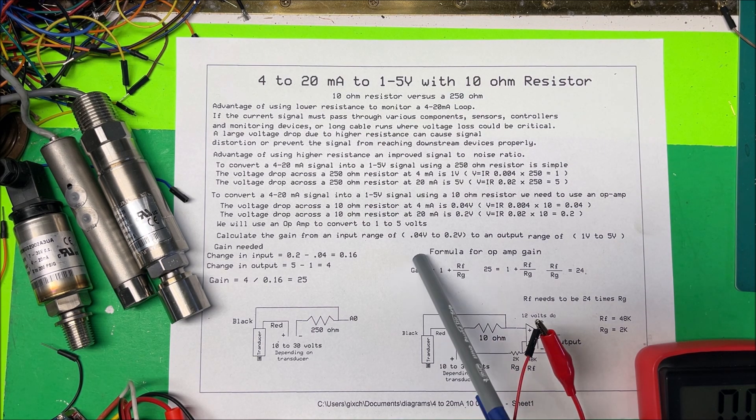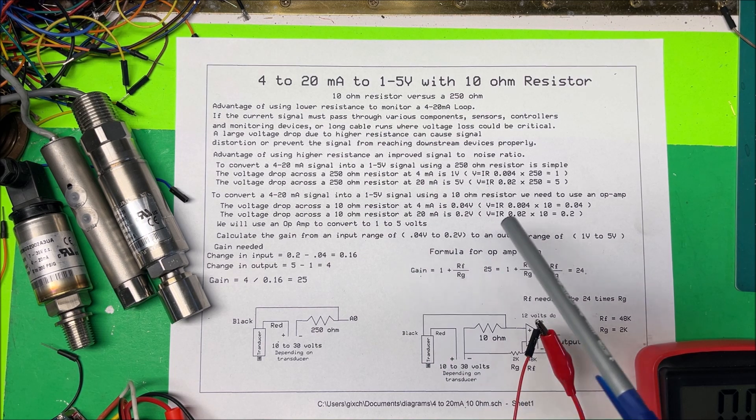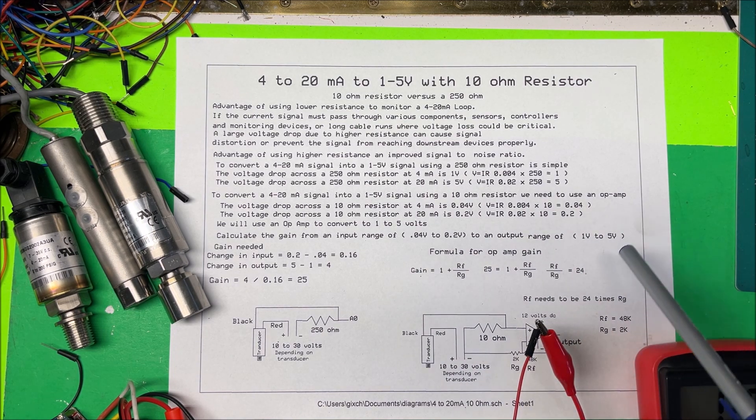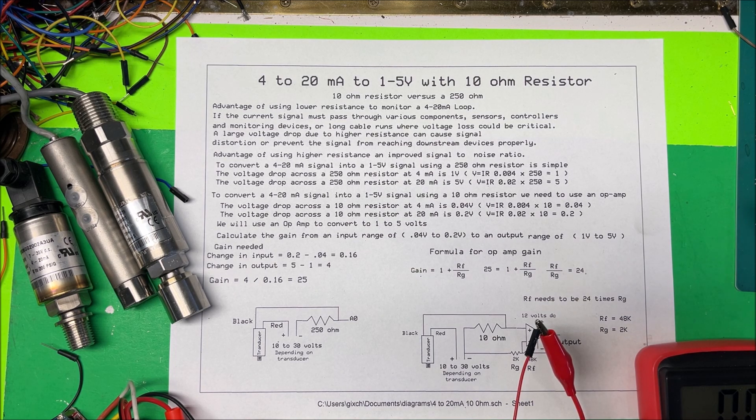So what we're going to do now is we have to find out the gain. We're going to just have to use an op amp to bring that back up to the 1 to 5 volts, so we need to find the gain of the op amp we need. The change in input voltage is from 0.2 to 0.04, so that's 0.16 volts difference. The change in the output is 5 minus 1.